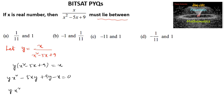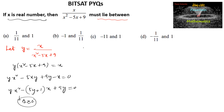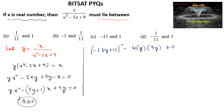We can rewrite this as yx² - (5y + 1)x + 9y = 0. Since x is a real number, the discriminant must be greater than or equal to zero. So b² - 4ac ≥ 0: (5y + 1)² - 4·y·9y ≥ 0, which gives 25y² + 10y + 1 - 36y² ≥ 0.